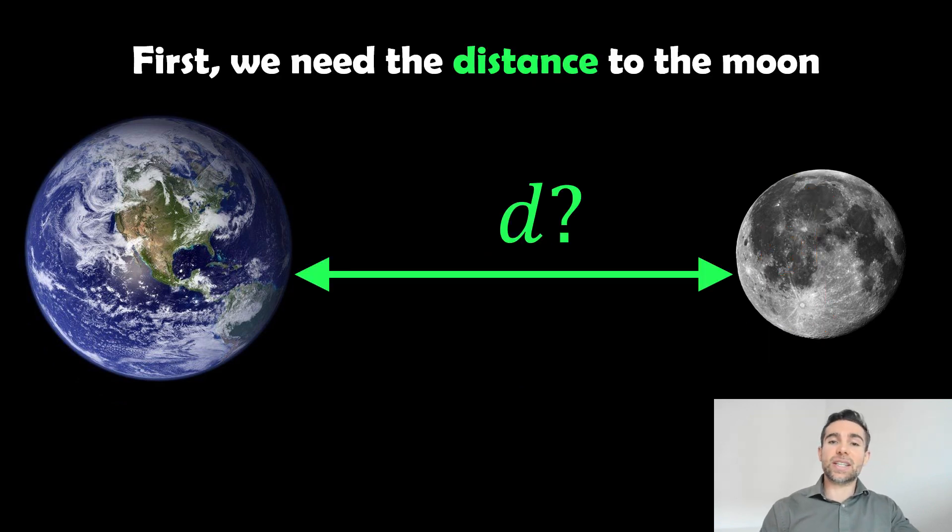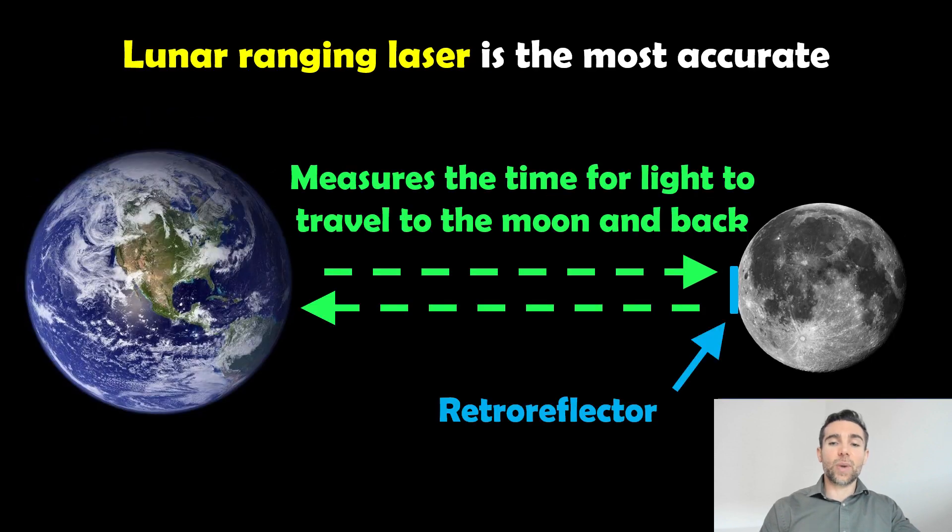The first thing we need to do is find the distance to the moon, which we'll call lowercase d. There are a few ways you can do that. The modern way is to point a laser at the surface—there's actually a retro reflector there that was placed by the Apollo missions. You basically aim the laser and measure the time it takes to go to the moon and come back.